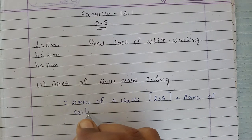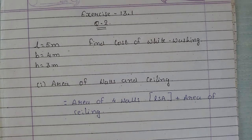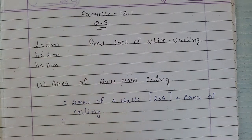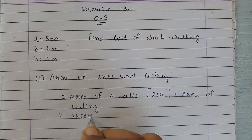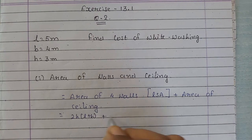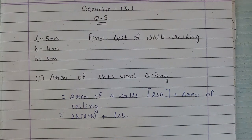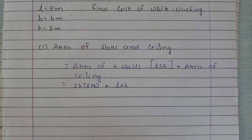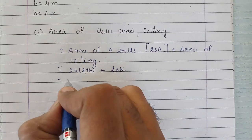As we have done in the first question, the lateral surface area formula is 2H into bracket L plus B, and the area of the ceiling is L into B, because the ceiling is rectangular in shape.